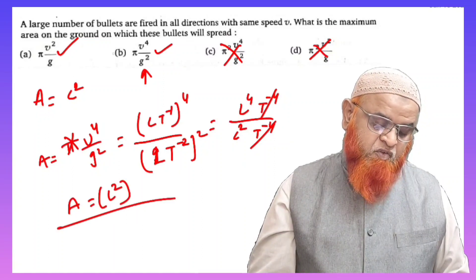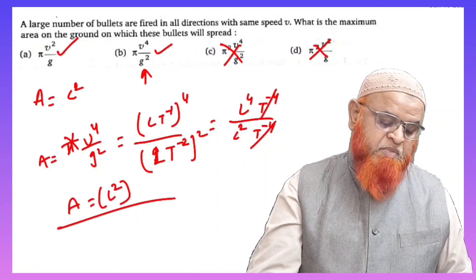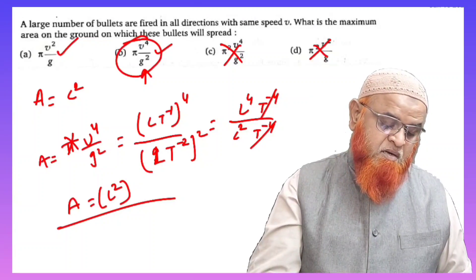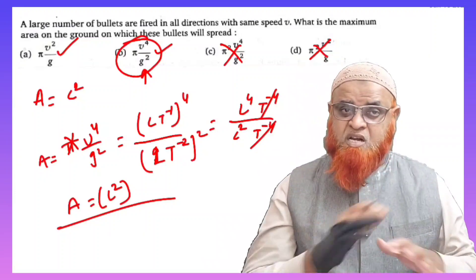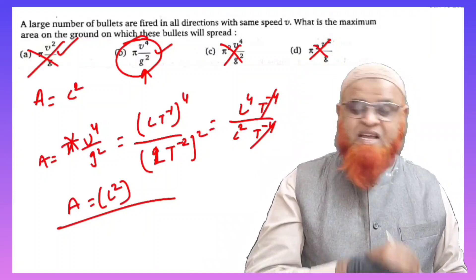The T⁻⁴ terms cancel. What is left for area is nothing but L². Therefore, you can say that option B is ultimately the correct option, because you are getting the dimensional formula for area only for option B, not for option A, which is wrong.